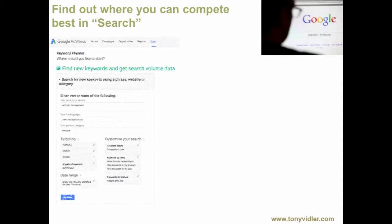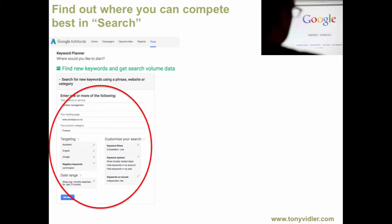You start to refine it by going down to Customization — that's when you really start to filter. And if you have a look at where it says Customize Your Search, one of the filters you can use — and this is where you get great bang for buck — is deciding whether you want to compete in highly competitive categories or whether you're looking for words and terms where the competition is relatively low.